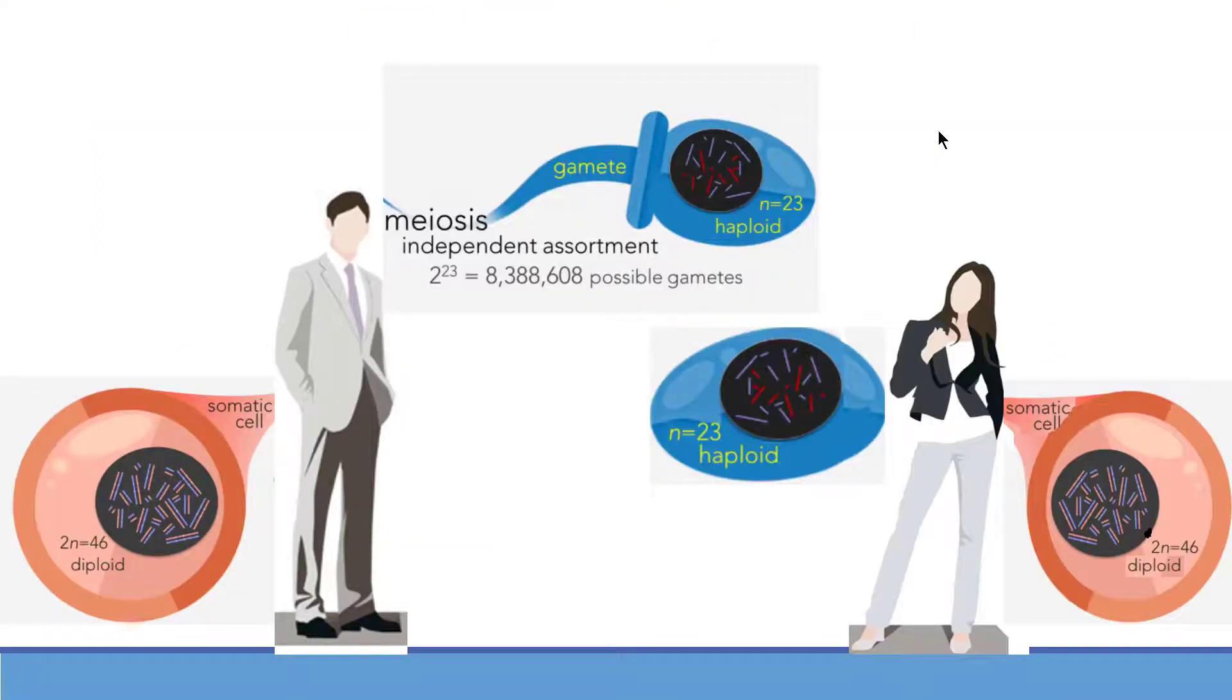The gametes have half the number of chromosomes as the parent cell. As we can see that human beings contain 46 chromosomes and it is called a diploid cell. But while making gametes, these cells become haploid and have 23 chromosomes in them.